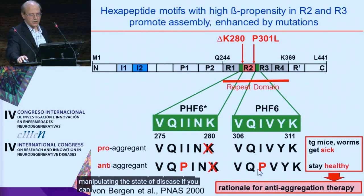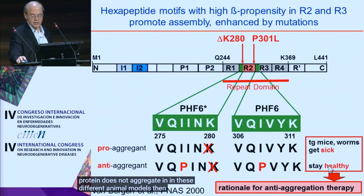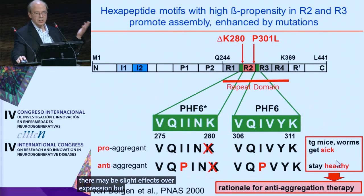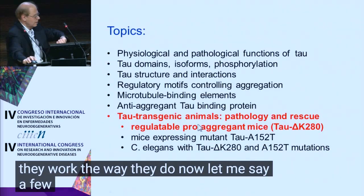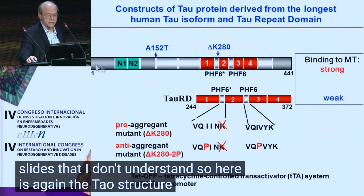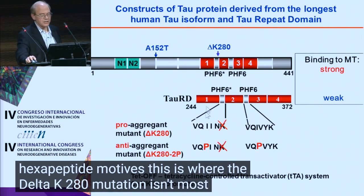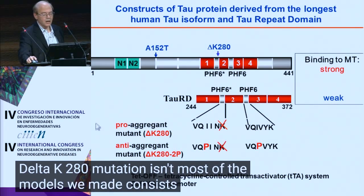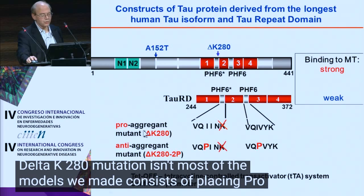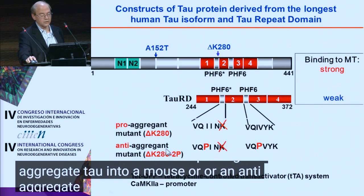If tau cannot aggregate — and in fact this protein does not aggregate in these different animal models — then you have no effect of tau. You can overexpress it; there may be slight effects of overexpression, but the animals don't get sick. Here again is the tau structure with the hexapeptide motifs, showing where the delta K280 mutation is. Most of the models we made consist of placing pro-aggregant tau into a mouse or an anti-aggregant tau, and then comparing the two.